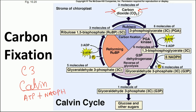Once carbon dioxide binds to RuBP, it is fixed with the help of an enzyme known as Rubisco — ribulose bisphosphate carboxylase/oxygenase. This enzyme fixes CO2 along with RuBP to produce an unstable six-carbon intermediate, which is immediately broken down into two three-carbon components known as 3-phosphoglycerate (3-PGA).